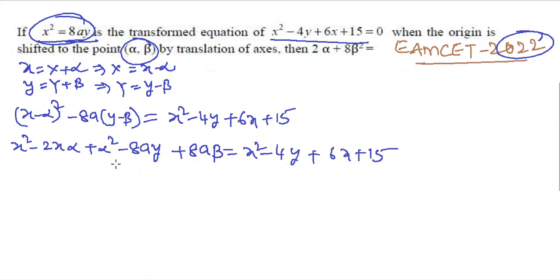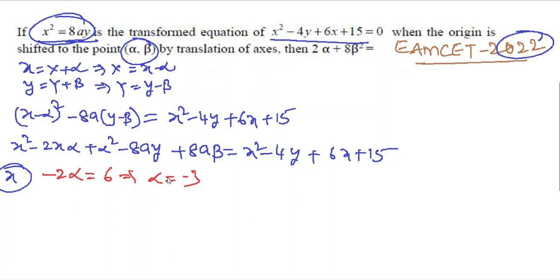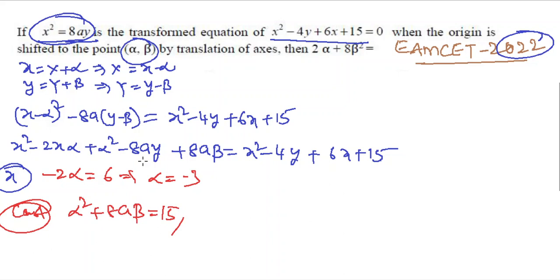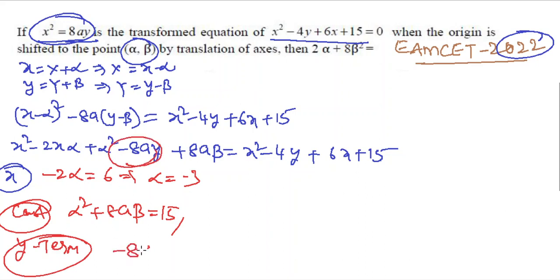Equating x-coefficients: −2α = 6, so α = −3. Equating y-coefficients: −8a = −4, so a = 1/2. Equating constant terms: α² + 8aβ = 15, giving 9 + 8·(1/2)·β = 15, so 4β = 6, β = 3/2.